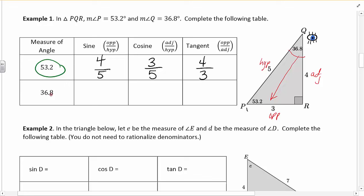So if I want the sine of 36.8, I want to divide the opposite by the hypotenuse. So opposite 36.8 is 3. The hypotenuse is 5. Adjacent over hypotenuse will give me cosine. Adjacent to 36.8 is 4. Hypotenuse is still 5. And tangent is opposite over adjacent. Opposite is 3. Adjacent is 4.